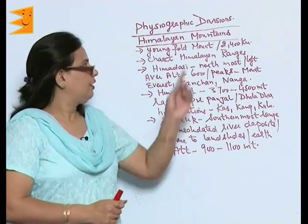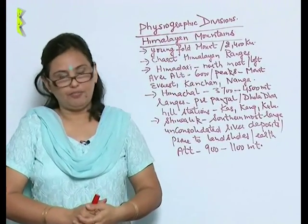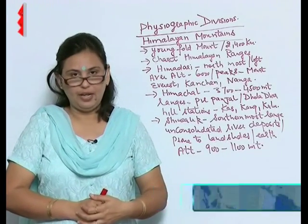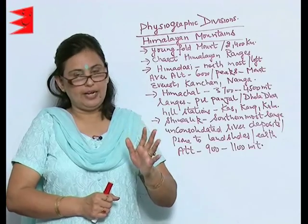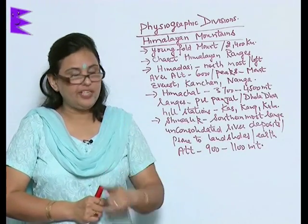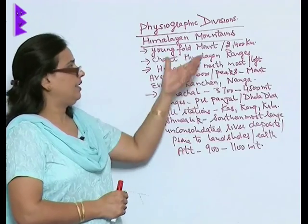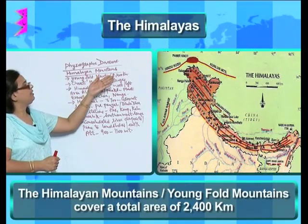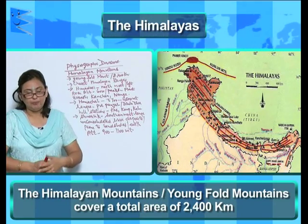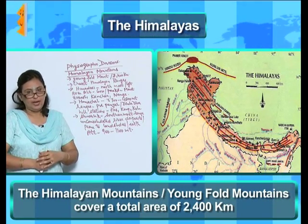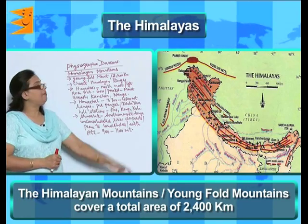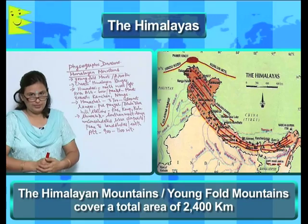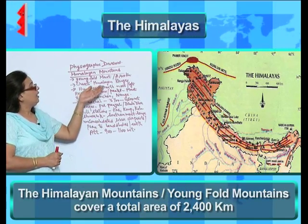Let's talk about the physiographic divisions of India. There are six physiographic divisions of India, and we shall be taking up one in each clipping. The first one is the Himalayan mountains. The Himalayan mountains are also called the young fold mountains, and the total area covered by them is 2400 kilometers.